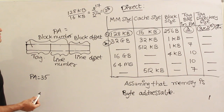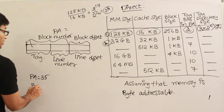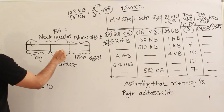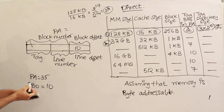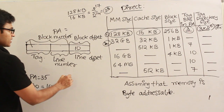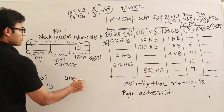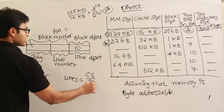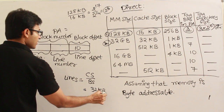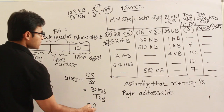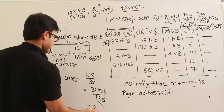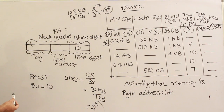The block size is 1 KB, so the block offset is 10 bits. To find the number of lines: cache size divided by block size, which is 32 KB divided by 1 KB. That equals 32, which is 2 to the power of 5.